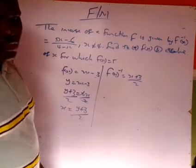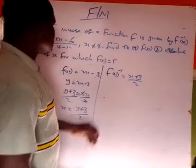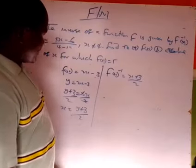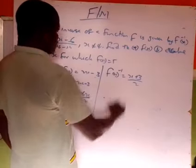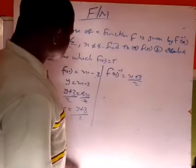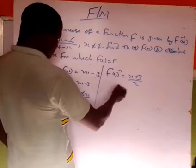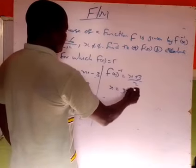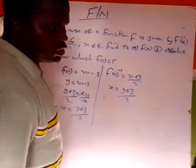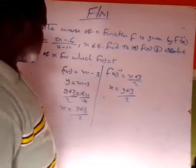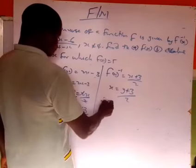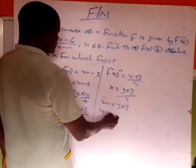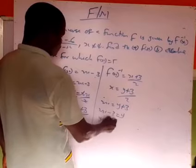Now you want to find the original function from the inverse. You replace and work back: here you have x equal to y plus 3 over 2, so 2x equal to y plus 3, then y equal to 2x minus 3. So it's vice versa — the function and its inverse are reverses of each other.